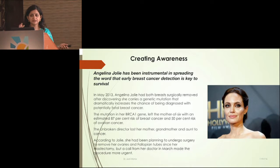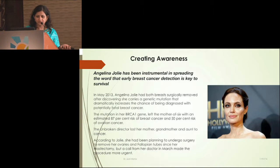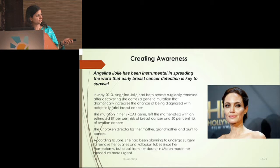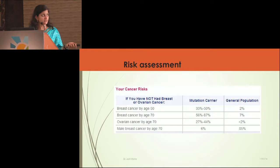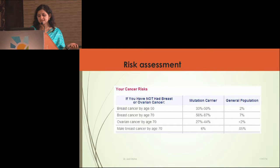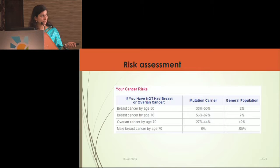Angelina Jolie suddenly made all of us aware of how to counsel patients, because patients started coming to us and we didn't know much about genetics at that time. She had a strong family history — her mother and grandmothers all had cancers — and she was BRCA1 positive. She knew her chance of developing breast cancer was 87% and 50% for ovarian cancer, so she underwent bilateral salpingo-oophorectomy and bilateral mastectomy. In general population, risk of breast cancer by age 50 is 2%, whereas in mutation carriers it is 33–55%. For ovarian cancer, the general population risk is 2% versus 27–44% in carriers.